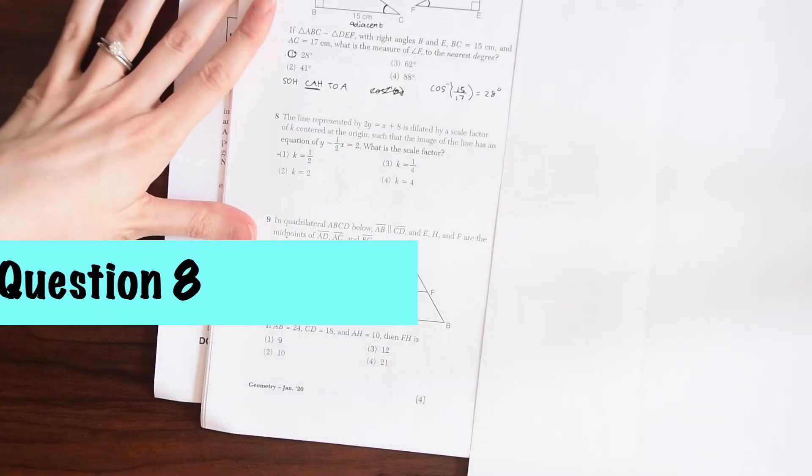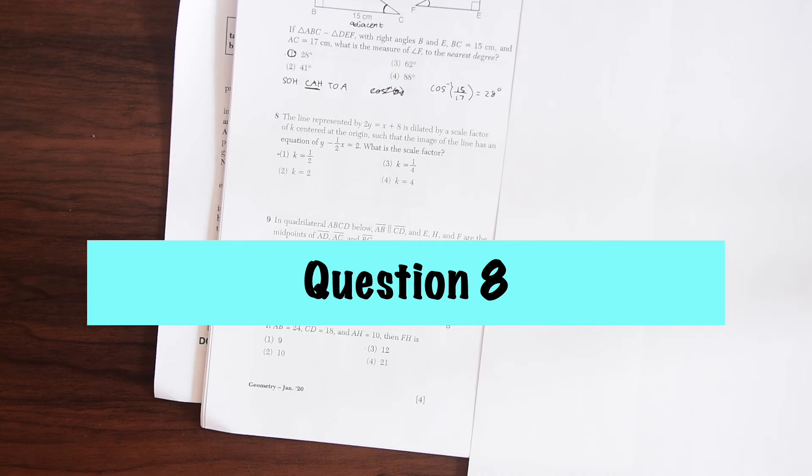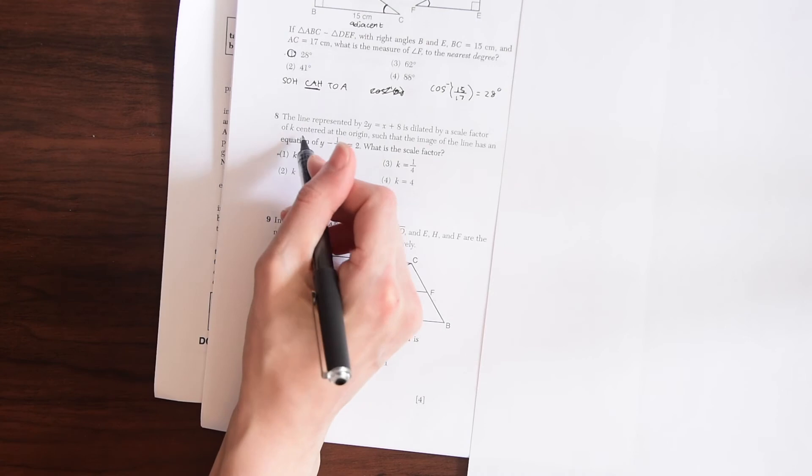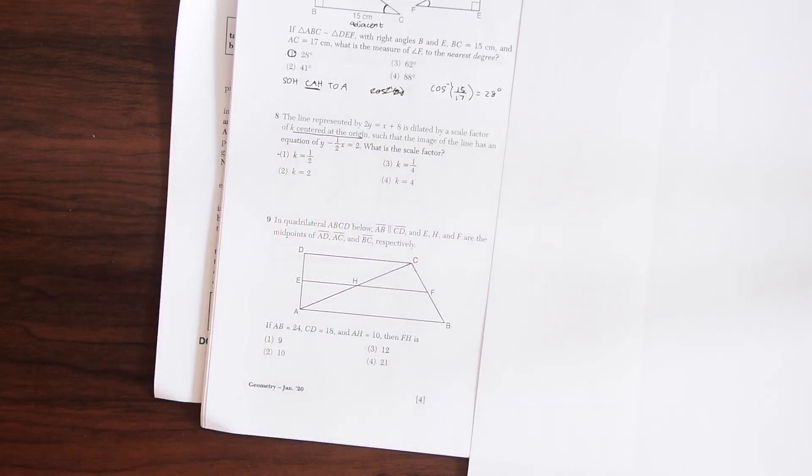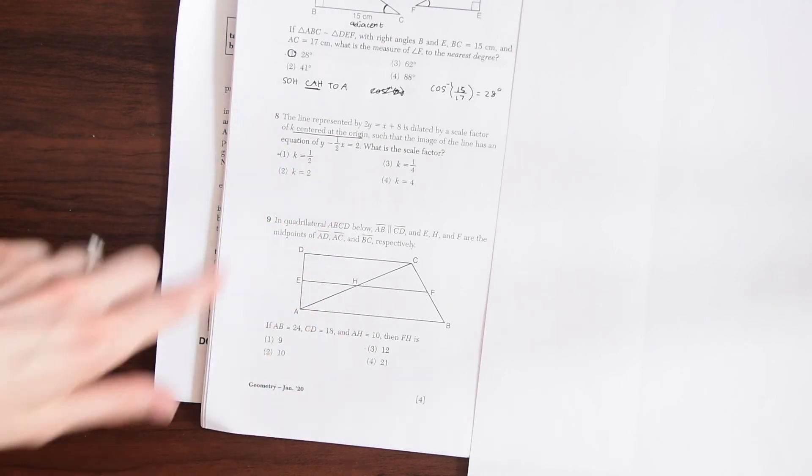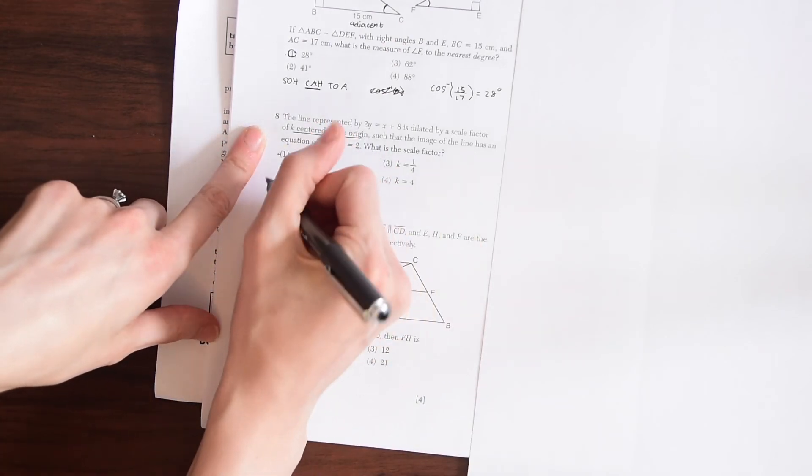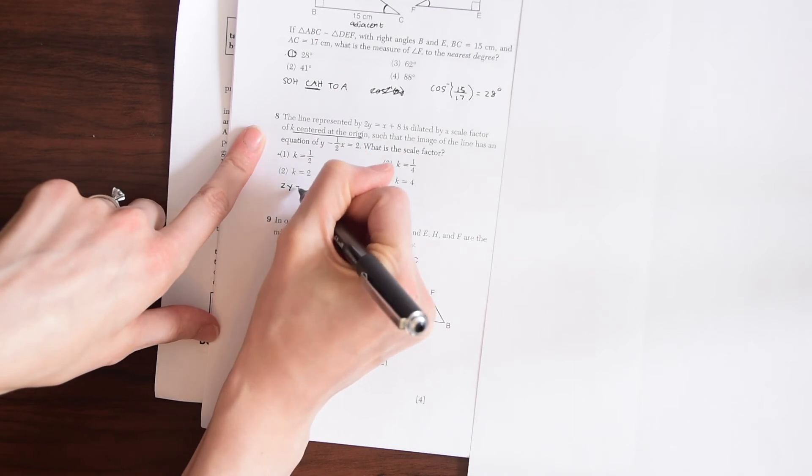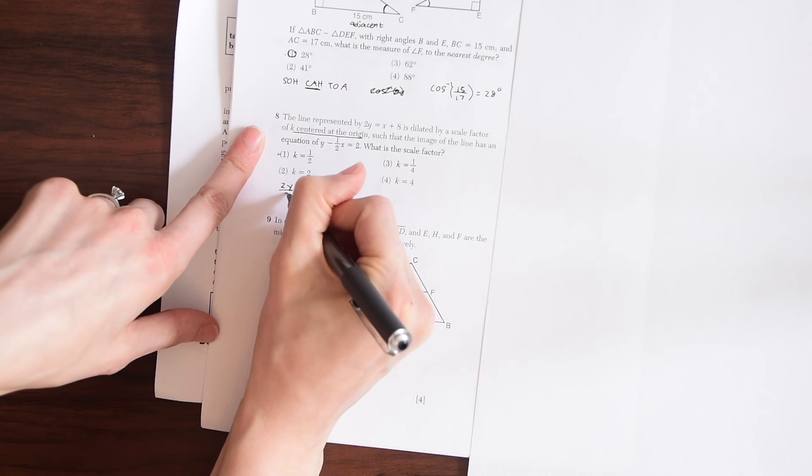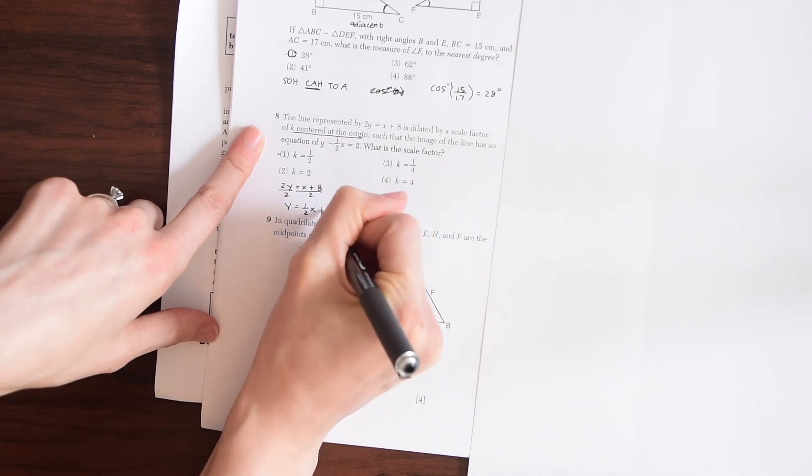Question number eight. The line represented by 2y equals x plus 8 is dilated by a scale factor of k centered at the origin. So we know we're centered at the origin such that the image of the line has an equation of y minus one half x equals 2. What is the scale factor? So let's just get these both in y equals mx plus b form. So we start with 2y equals x plus 8. So let's put this in order. So just divide out that 2 and we get y equals one half x plus 4.